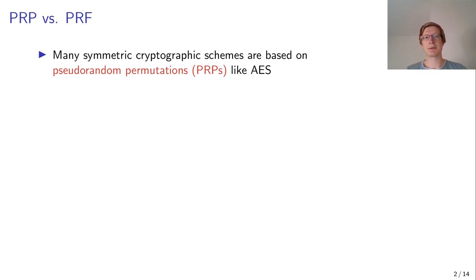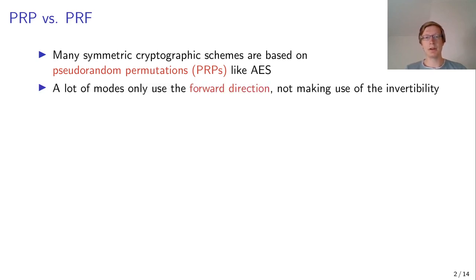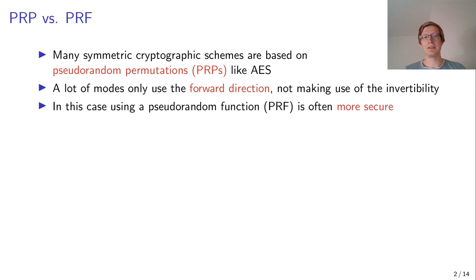When we look at symmetric cryptographic schemes, we see that a lot of them are using PRPs or pseudorandom functions like AES, for example. But a lot of them only use them in forward directions and do not use the invertibility. In a lot of cases, actually using pseudorandom functions or PRFs that do not have the invertibility property are often more secure.